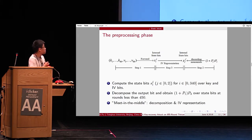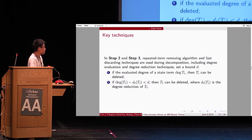The whole processing phase could be divided into three steps. In the first step, we compute forward by using the k bits and IV bits. And compute some internal state bits. And in the second step, we decompose backward to the internal state bits. And in the middle, we use IV presentation to match the gap. In step two and three, many repeated state terms must be removed. And some fast discarding techniques are used when decomposition.